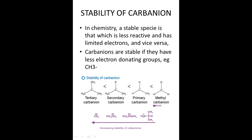Let's look at the stability of carbanions. When we say a species is stable, that means the species is less reactive. In chemistry, a stable species is that which is less reactive and has limited electrons. An unstable species will be more reactive and has more electrons in the system. So if you have a carbanion with more electrons in the system, that carbanion becomes less stable and more reactive. Carbanions are stable if they have fewer electron-donating groups; they will be unstable if they have more electron-donating groups.